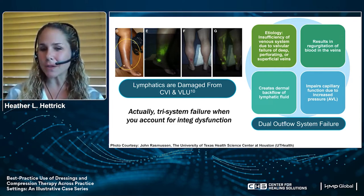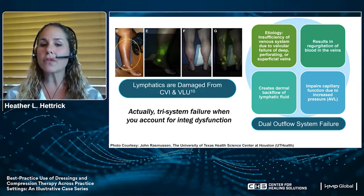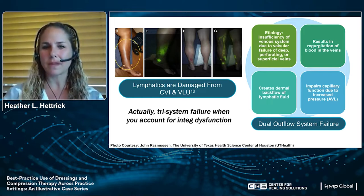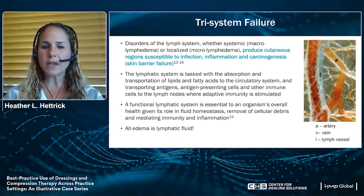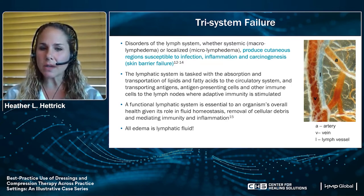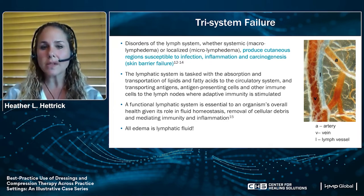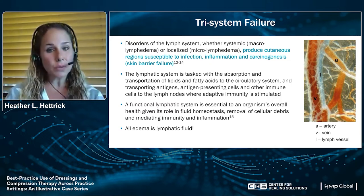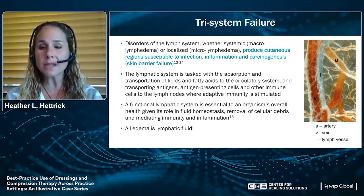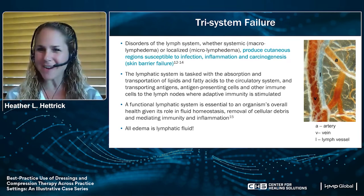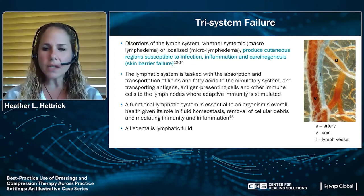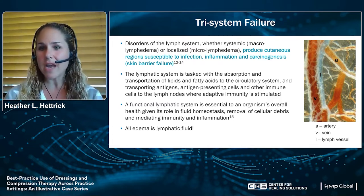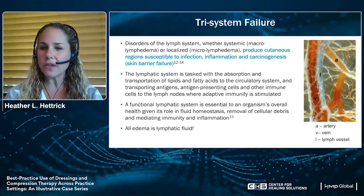It's actually a tri-system failure when you account for associated integumentary dysfunction as well. Disorders of the lymph system, whether systemic or localized, produce cutaneous regions of skin susceptible to infection, inflammation, and even carcinogenic changes — known as skin barrier failure or lymphatic dermopathy. These systems are very interrelated, so when there's compromise in one system, it's safe to assume there's dysfunction in the others. As the image shows, the arteries, veins, and the translucent lymphatic vessels are in very close approximation, and the lymphatic system actually developed out of the venous system.